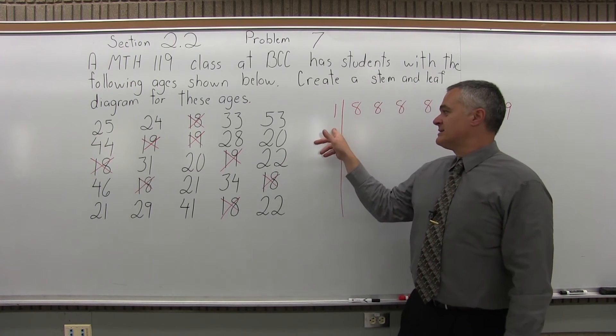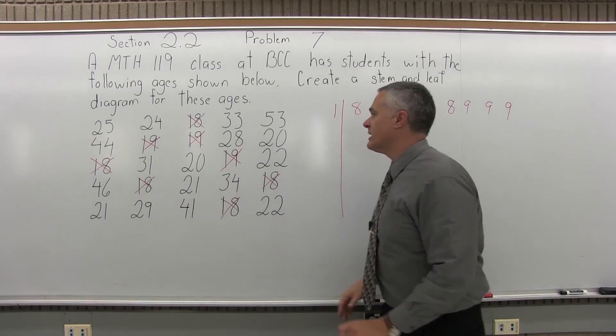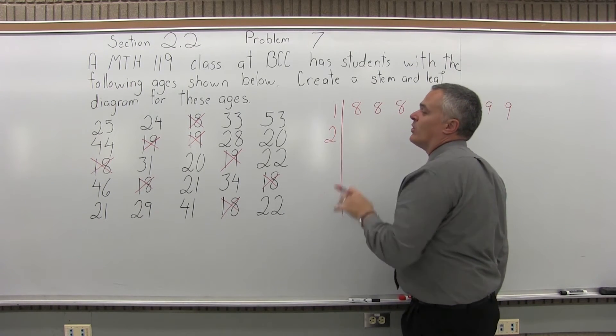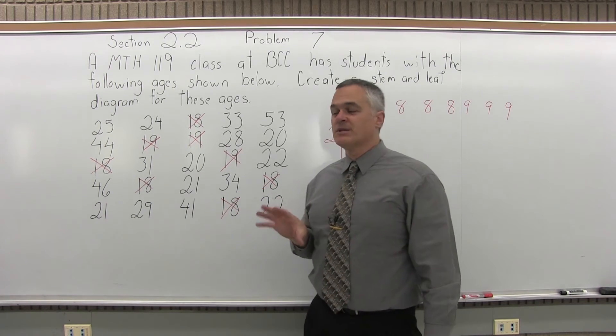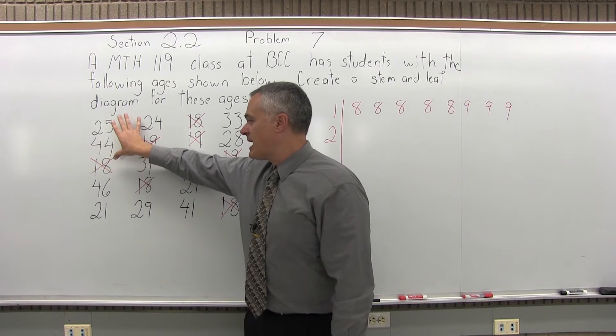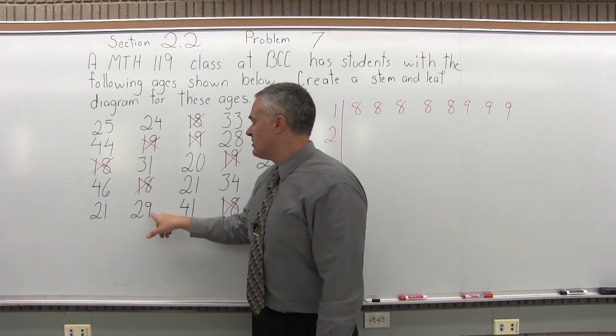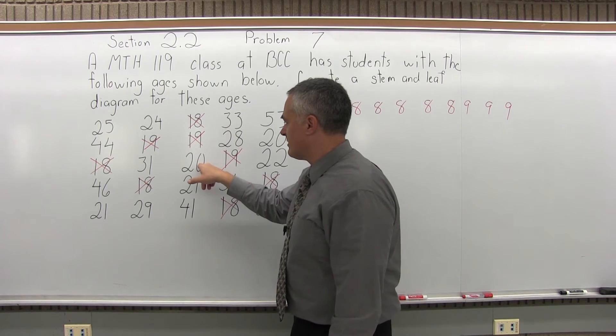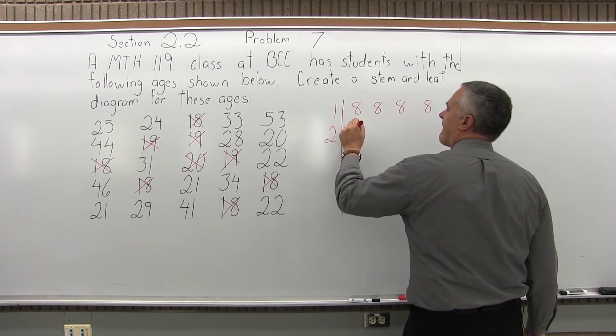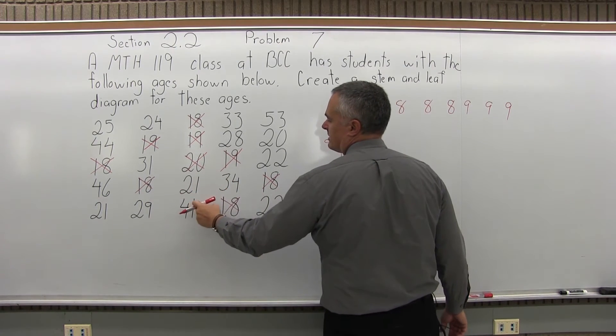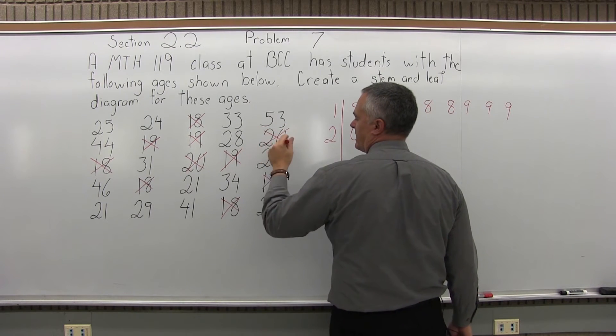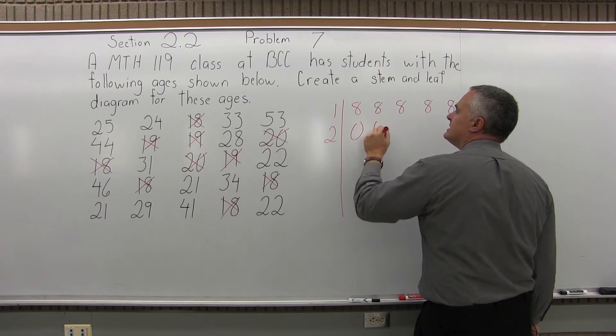So the next stem will be a 2 for students in their 20s. Now you want to list those digits in order. I see a lot of students in their 20s. I'm going to start with the two 0s first. Nobody in the first couple of columns is 20. Here's a 20, right there. So let's take that, put in a 0. Here's one more that's exactly 20, so two 0s.